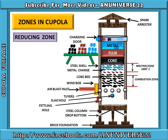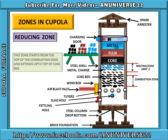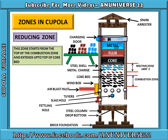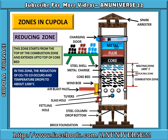Next zone is the reducing zone. This zone starts from the top of the combustion zone and extends up to the top of the coke bed. In the reducing zone, the reduction of carbon dioxide to carbon monoxide occurs and the temperature drops to about 1200 degrees Celsius. The reaction that takes place is: CO2 + coke → 2CO, with a reduction of heat.